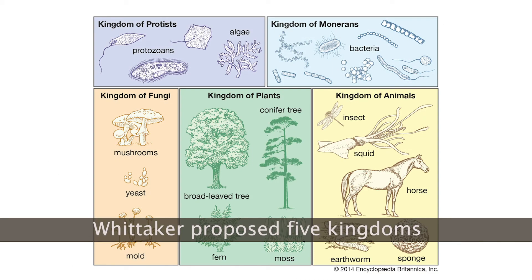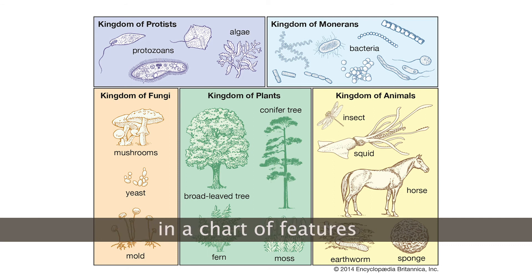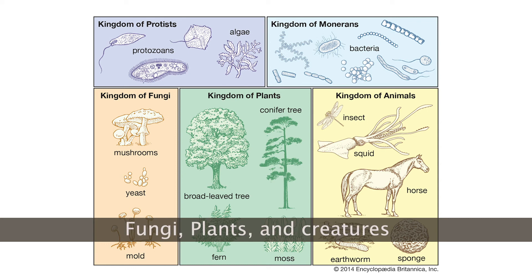Whittaker proposed five kingdoms in a chart of features. The five are monera, protista, fungi, plants, and creatures.